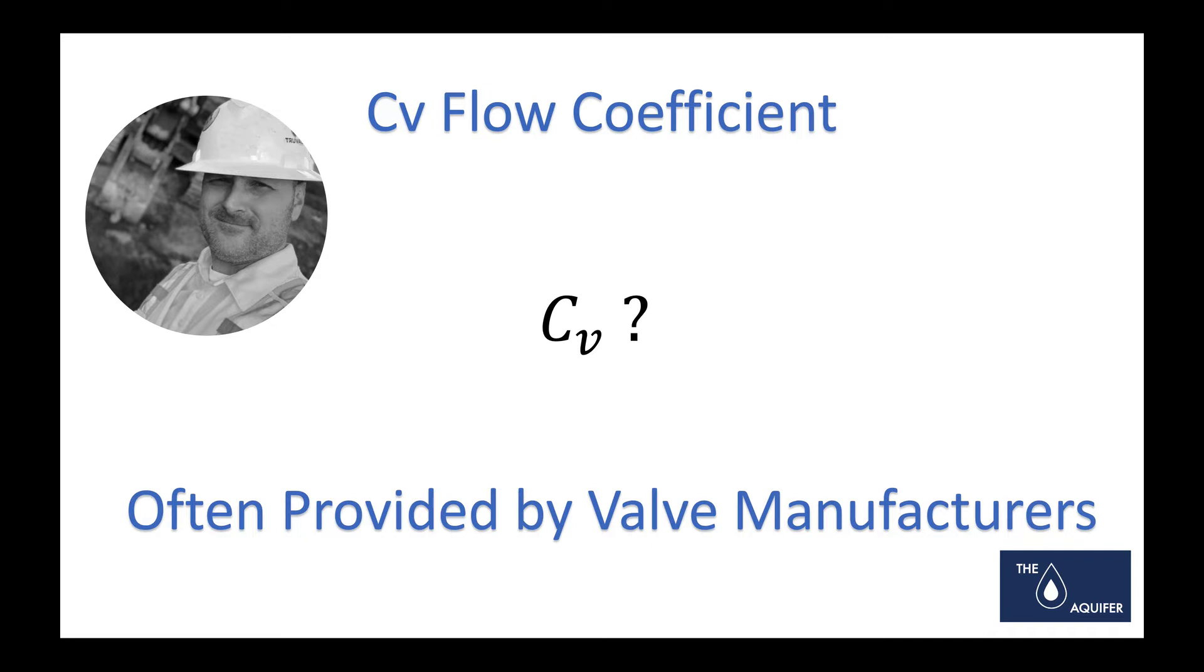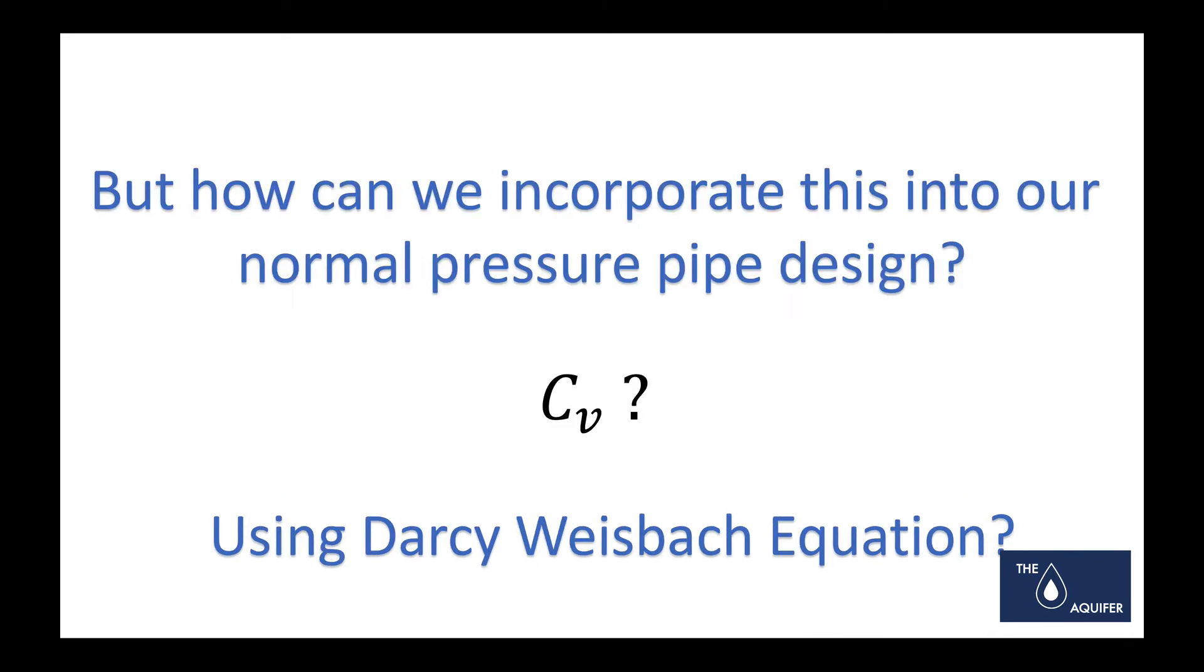If you're like me, you're going to think, well, what am I supposed to do with this? This thing's unitless. It doesn't appear to be useful as a K value because the numbers are going to be ridiculously high—they're going to be hundreds. So what is a Cv value and how can we incorporate this into our normal pressure pipe design?